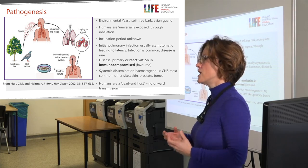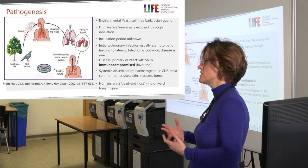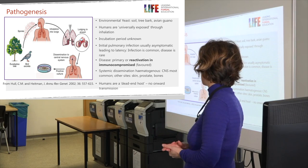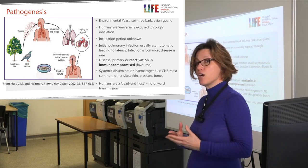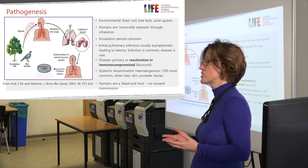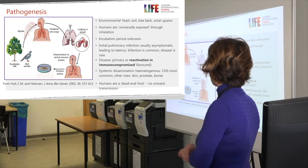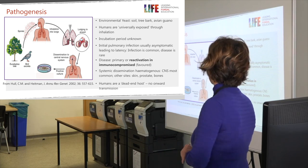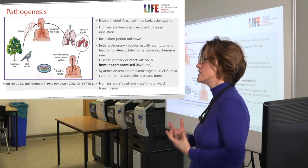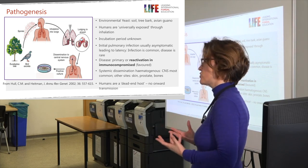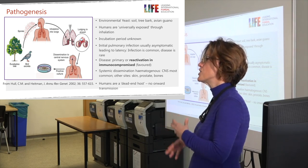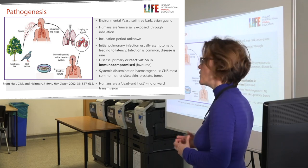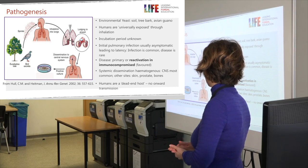Disease is usually either primary — meaning the exposure was recent and the patient develops an infection usually in the setting of a compromised immune system — or it can occur after a period of latency, which can go on for years or even decades, as a reactivation of infection. Most evidence supports this latter phenomenon. What happens is that the organism then enters the bloodstream and is disseminated throughout the body to all organs, but it has a particular predilection for the brain, where it causes meningoencephalitis.